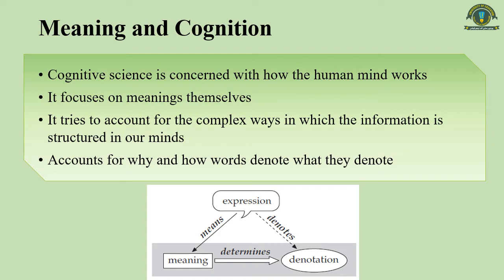The cognitive approach focuses on meanings themselves. It tries to provide positive descriptions of word meaning, accounting for why and how words denote what they denote — we have already discussed denotation in our first two lectures. In terms of the Semiotic Triangle, a cognitive approach to semantics can be characterized as focusing on the base of the triangle: the meaning and how it determines the denotation.